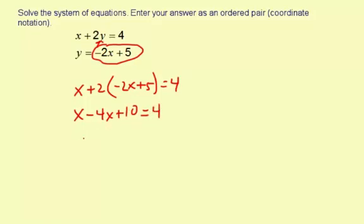So the next step is to combine like terms. x minus 4x is negative 3x, and then plus 10 equals 4.